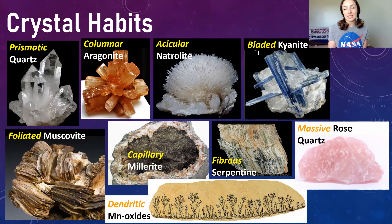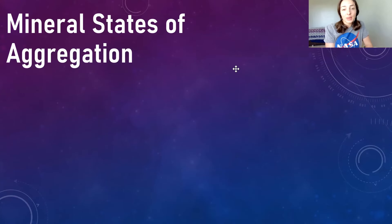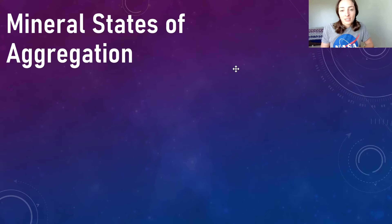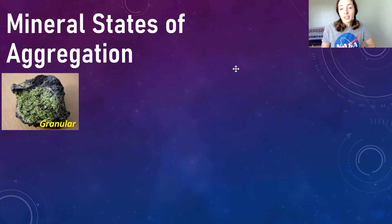Next we have mineral states of aggregation. Most minerals, unless unusually well crystallized, turn out as aggregates of smaller grains rather than large grains with specific crystal habits. If that's the case, we can use their states of aggregation to help identify the mineral. There is terminology to define different states, the first of which is granular, in which specimens consist of mineral grains of approximately equal size.